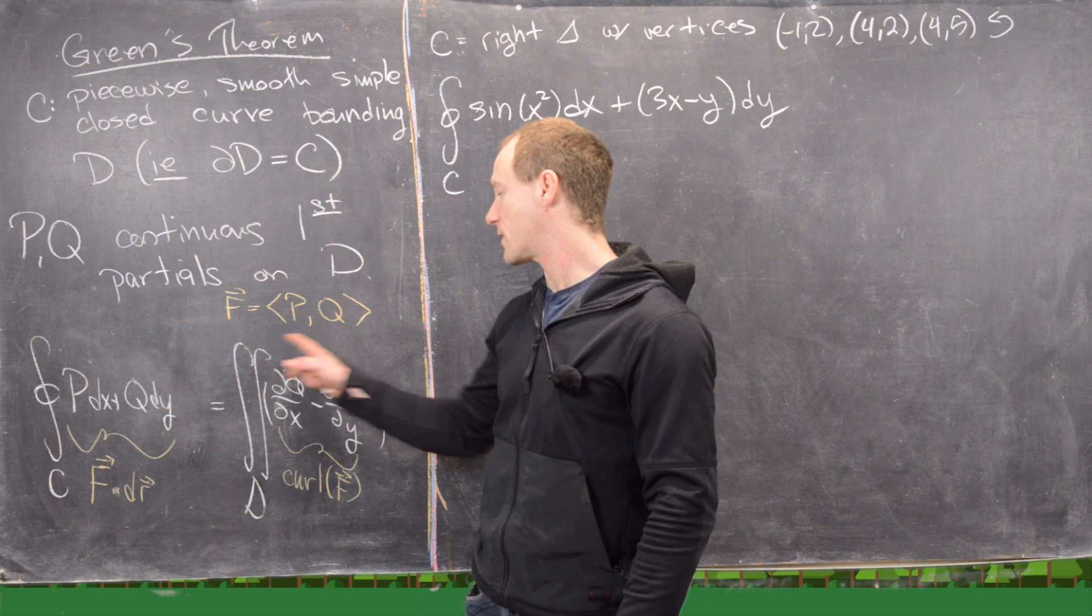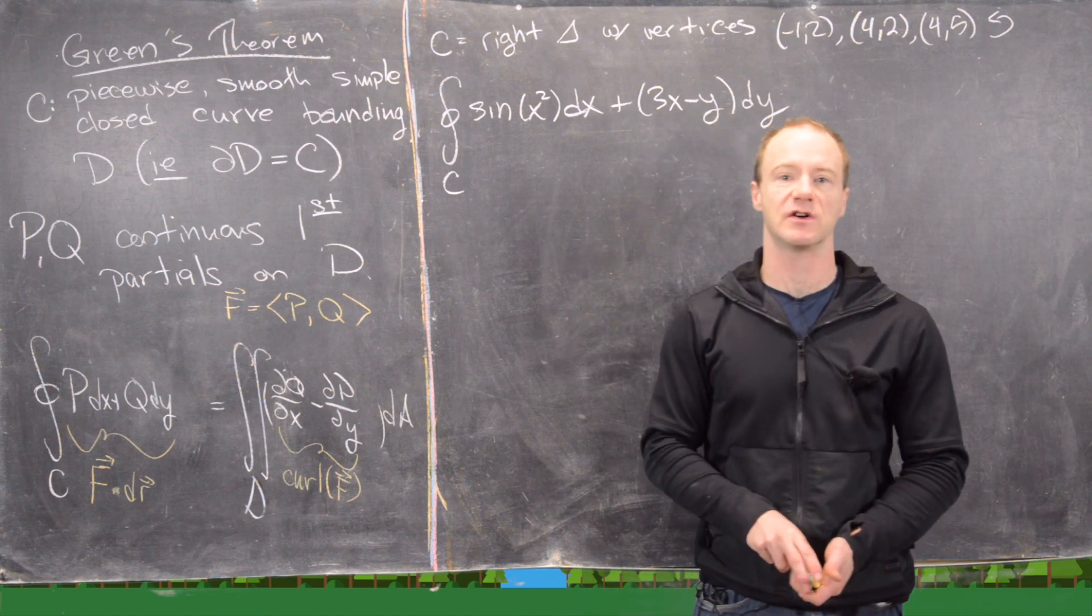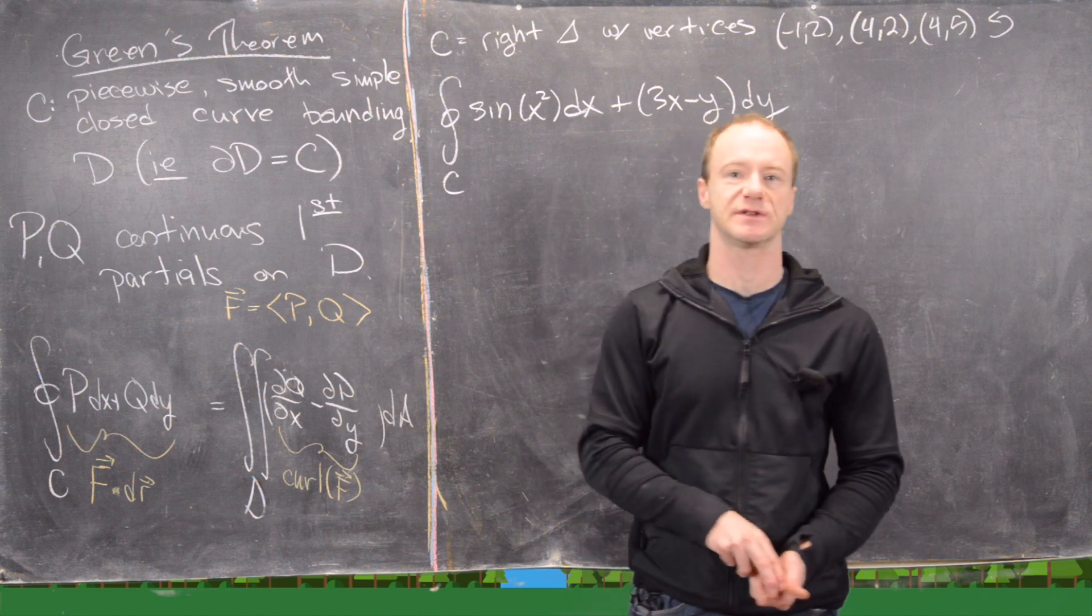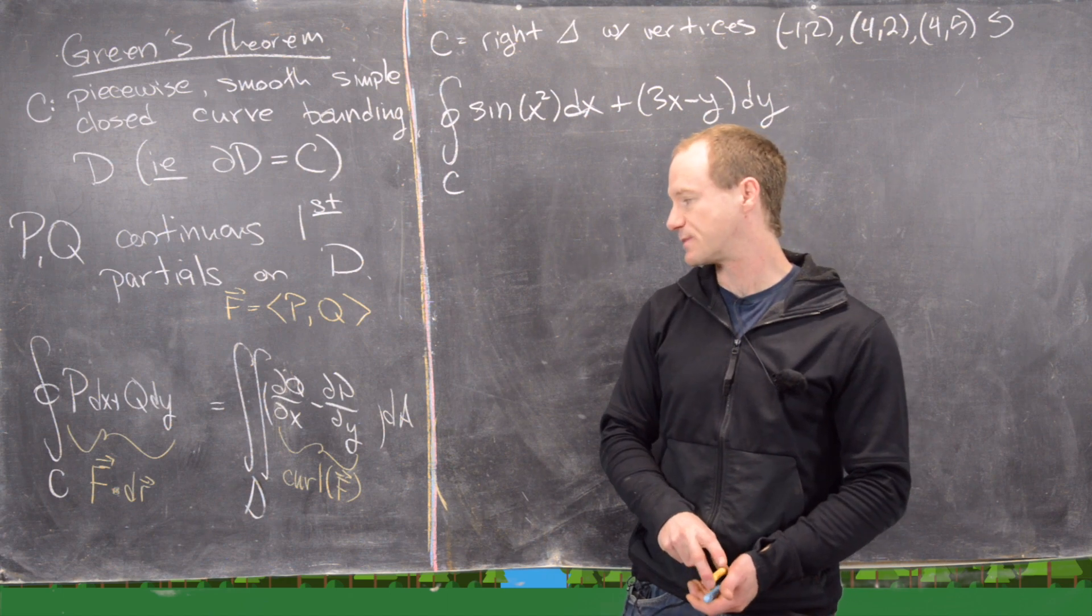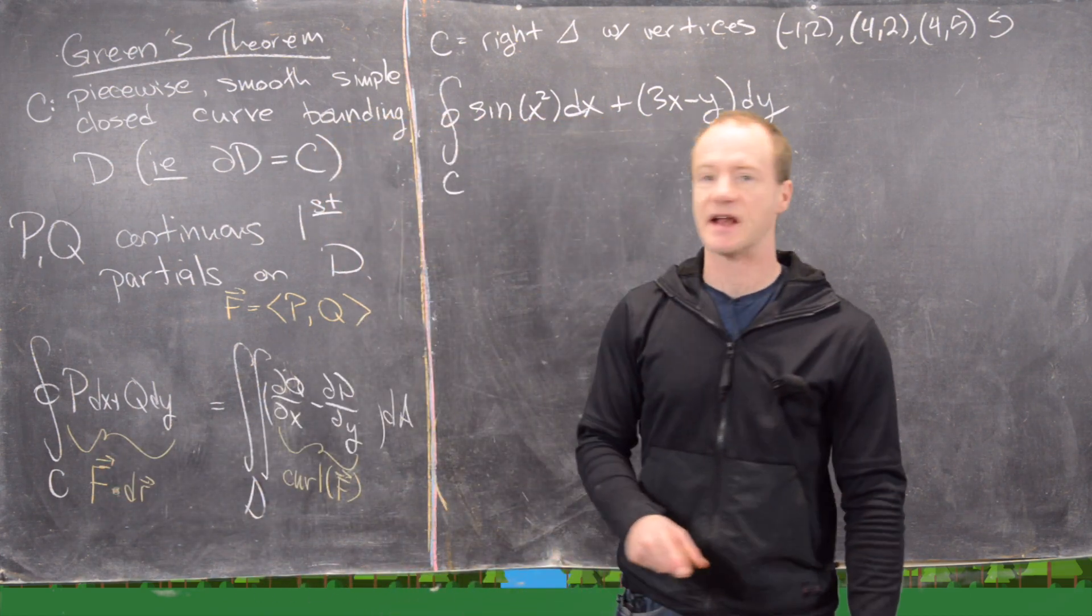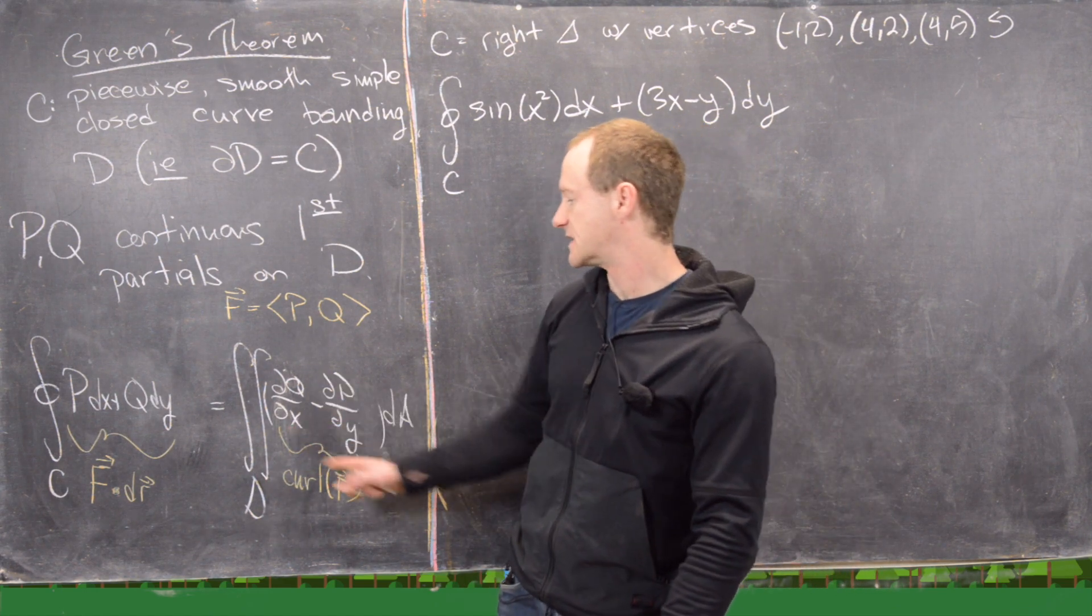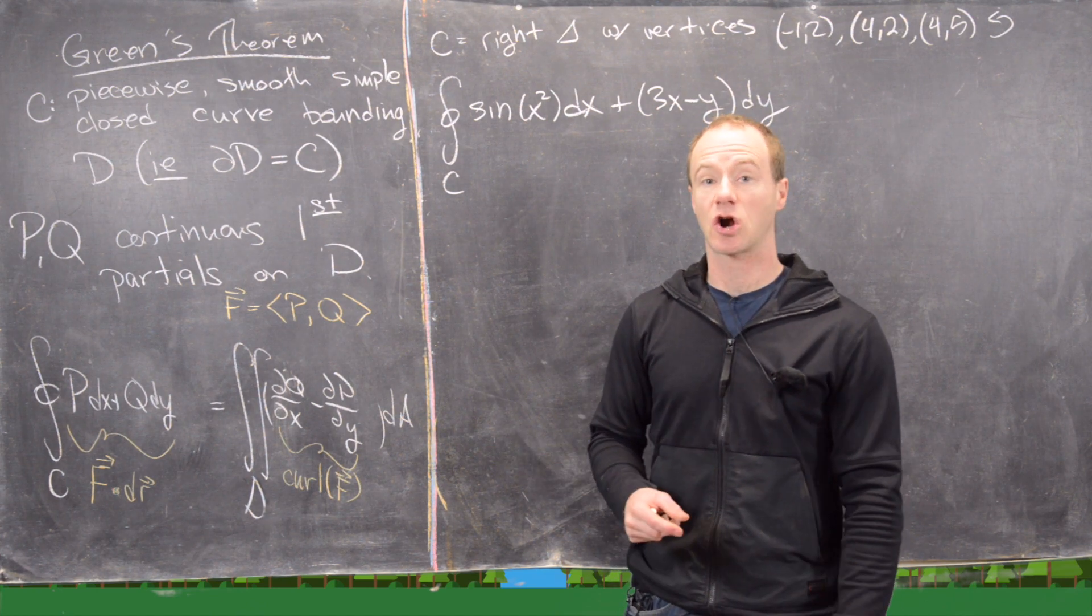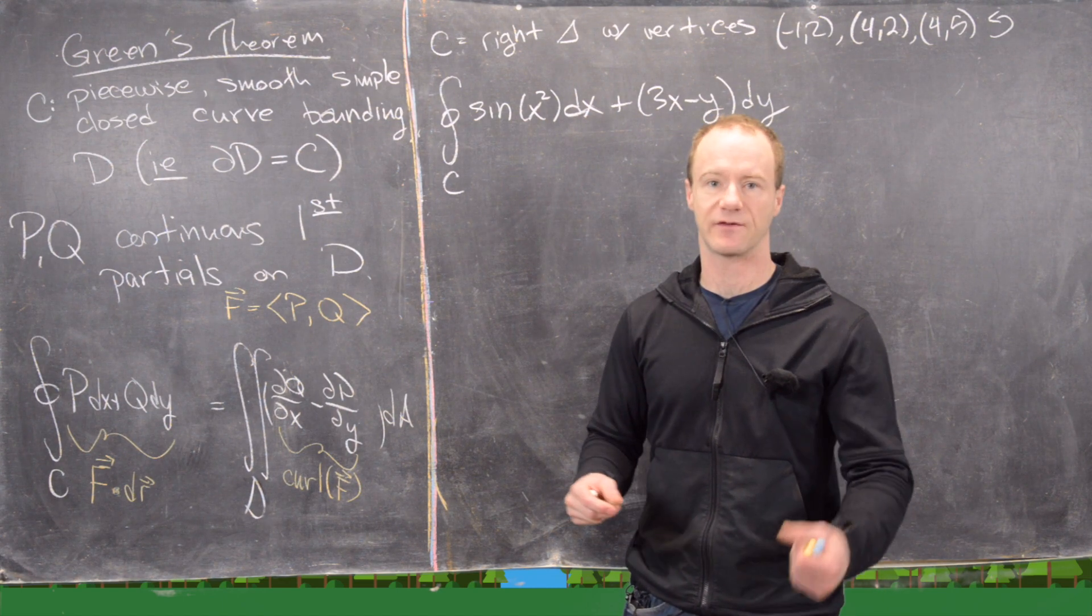We might want to put these together into a vector field. So F is a vector field with component functions P and Q. Then the line integral over C of P dx + Q dy is the same as the double integral over the region D of ∂Q/∂x - ∂P/∂y. Also notice that the left side is just the line integral of F · dR. And ∂Q/∂x - ∂P/∂y is just the curl of F. It's the curl of a two vector field. The curl of a three vector field is a slightly different definition.